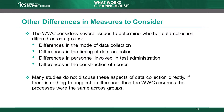The WWC considers several types of issues when deciding if the data collection differed between groups. The first issue is differences in the mode of data collection, as in the example where researchers used survey data in one condition and administrative data in the other. Another issue is differences in the timing of data collection—if outcomes were measured at different points in time, the additional time in one condition might influence the results. Differences in the personnel involved in test administration and differences in the procedures used to construct scores could also influence the results. Each of these examples leads us to question whether the estimated impacts are due to the intervention or to differences in the measurement of the outcomes. Studies may not always discuss these aspects directly; if there is nothing to suggest a difference, the WWC assumes the processes were the same across groups.